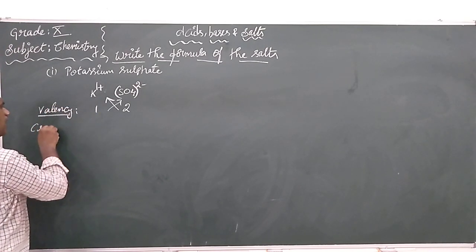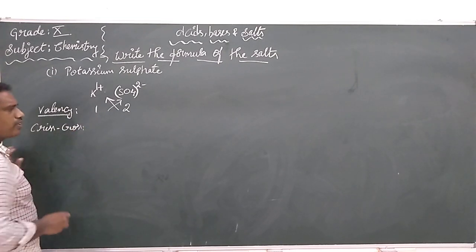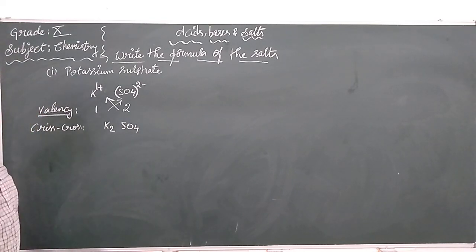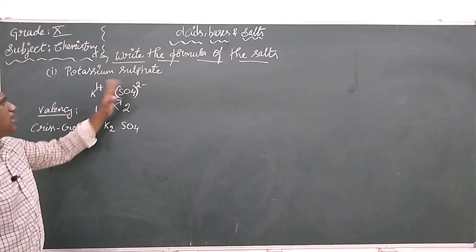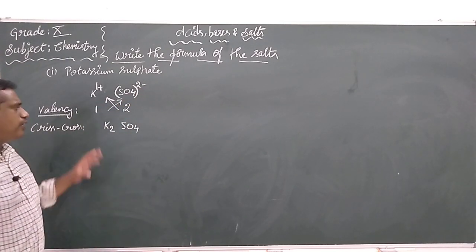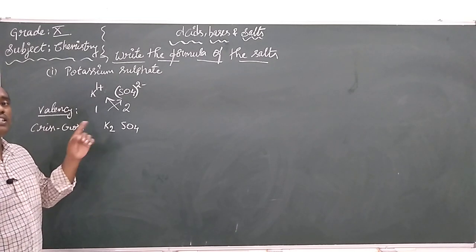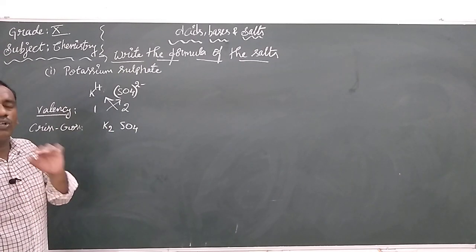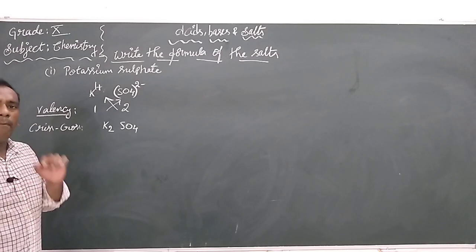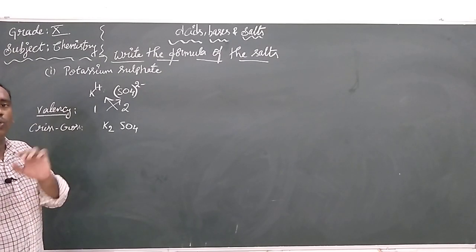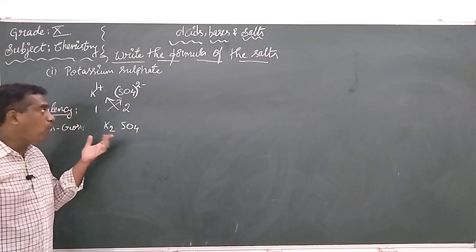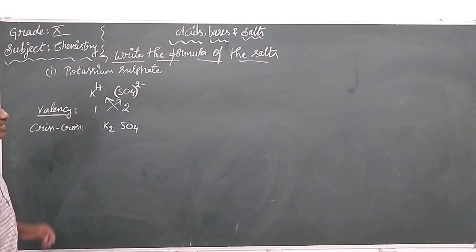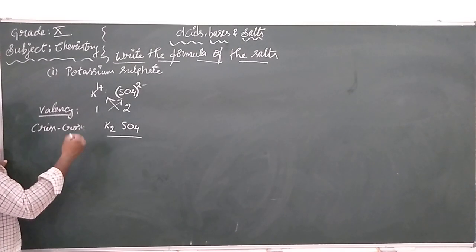Now finally what you are able to get is K2SO4 — potassium sulfate. Whenever the name is given, you can write the formula if you know the valence of the ions. Previously we got sodium chloride from hydrochloric acid reacting with sodium hydroxide. Now my question is: how can we get potassium sulfate? Potassium sulfate can be obtained by reacting potassium hydroxide.